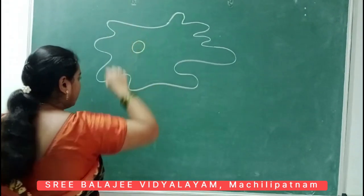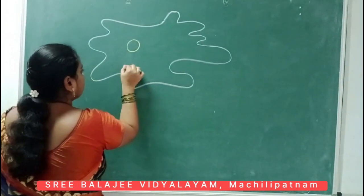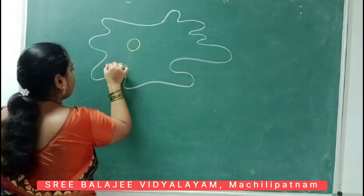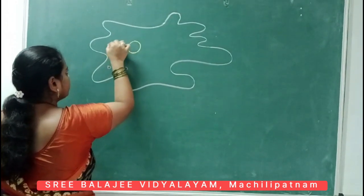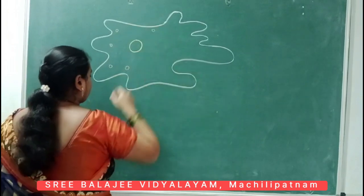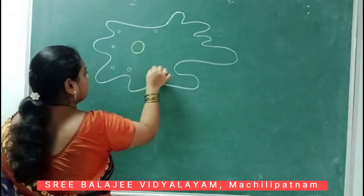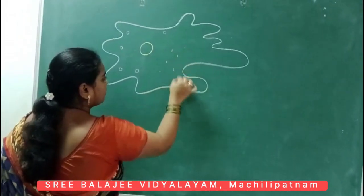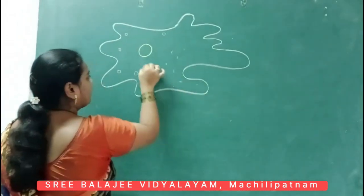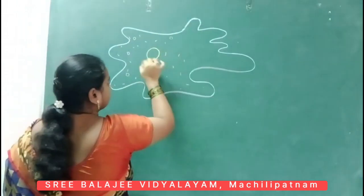this is the nucleus, and this is the food vacuole. Everybody, do you know the food vacuole? And this is the small dotted structure — you can call it as cytoplasm.